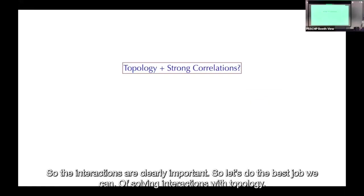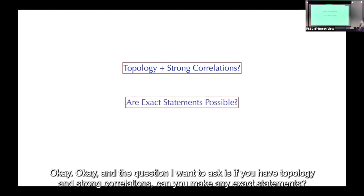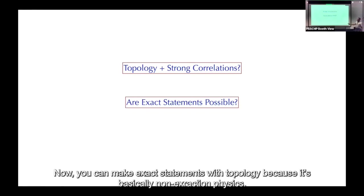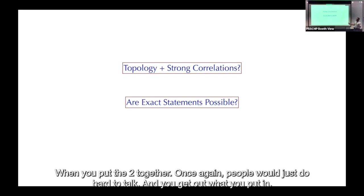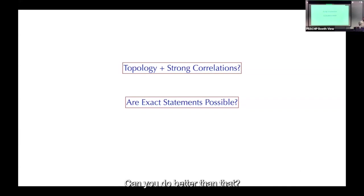So let's do the best job we can solving interactions plus topology. The question I want to ask: if you have topology and strong correlations, can you make any exact statements? You can make exact statements with topology because it's basically non-interacting physics, but when you put the two together, people just do Hartree-Fock and get out what they put in. Can you do better than that?